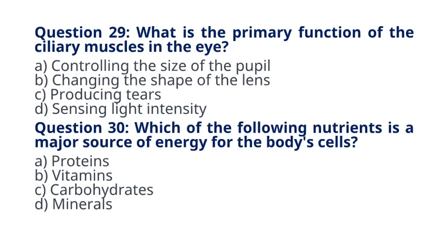Question 29. What is the primary function of the ciliary muscles in the eye? A. Controlling the size of the pupil. B. Changing the shape of the lens. C. Producing tears. D. Sensing light intensity. The correct answer to question 29 is option B. Changing the shape of the lens. Explanation: The ciliary muscles adjust the shape of the lens in the eye, allowing for the accommodation of near and far vision.